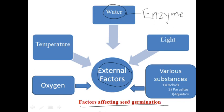Another factor is temperature. The concept of three cardinal points is applied to germination: minimum temperature is the lowest at which germination can occur, optimum temperature is at which germination is most rapid, and maximum is the upper limit of temperature. Examples like Fagus, Trifolium and various alpine plants germinate at a low temperature. In the hilly region, there is low temperature, so specific types of plants are observed in that area.